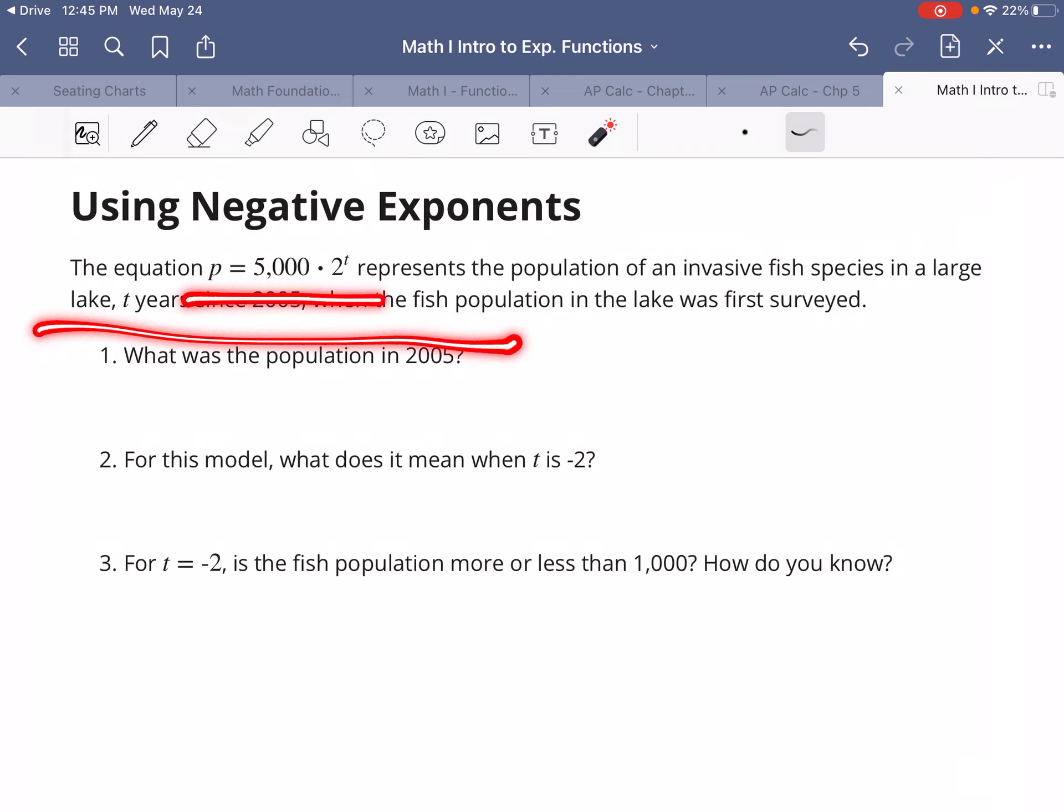Equation, P equals 5,000 times 2 to the T is the population of invasive fish species in a large lake T years since 2005. Oh, wait a minute. What was the population in 2005? How many years since 2005 is 2005? Or, I mean, if 2005 is our starting year, what's our starting value?